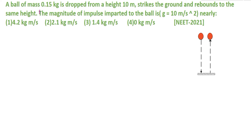Our first question is: a ball of mass 0.15 kg is dropped from a height of 10 meters. M is equal to 0.15 kg.